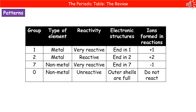There are a few groups we need to know key facts about, which we'll look at in more detail further on in the Chemistry GCSE course. Group 1 elements are metals and they're very reactive. Their electronic structures all end in 1, because they're in group 1, and that means they will always form +1 ions. Group 2 elements are also metals — still reactive, but not as reactive as group 1. Their electronic structures end in 2, and they form +2 ions in reactions.